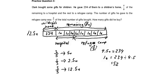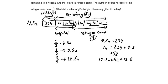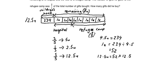How many gifts did he buy altogether? 12.5 units, so 12.5 units equals 52 multiplied by 12.5. Let's calculate: 52 times 12.5 gives us 650. So he bought 650 gifts.